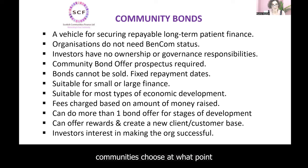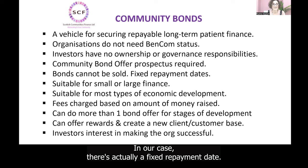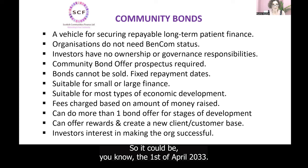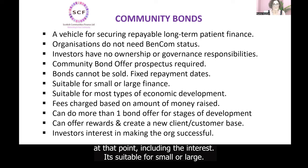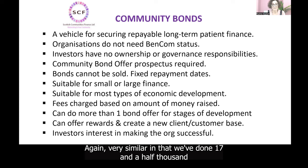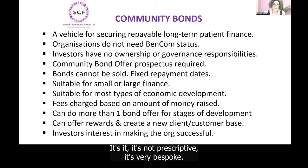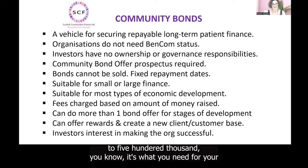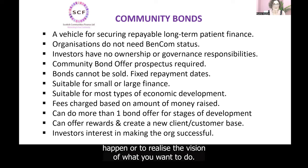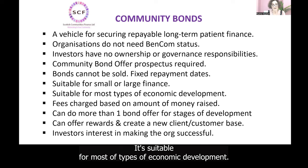You have to do a community bond offer prospectus very similar to what was shown for shares — opening date, closing date, how much you want to raise, maturity date, interest rate, all in there. There's a big warning in all these documents that your money is at risk, which is standard for any financial product. Similar to community shares, there isn't a secondary market — these can't be sold on the FTSE 100. Unlike shares where communities choose when to start repaying shareholders, with community bonds there's a fixed repayment date — for example 1st April 2033 — and the money must be repaid at that point including interest. It's suitable for small or large amounts — we've done £17,500, £200,000, and £2 million. Whether you want to raise £5,000, £50,000 or £500,000, it's what your community needs to make something happen.